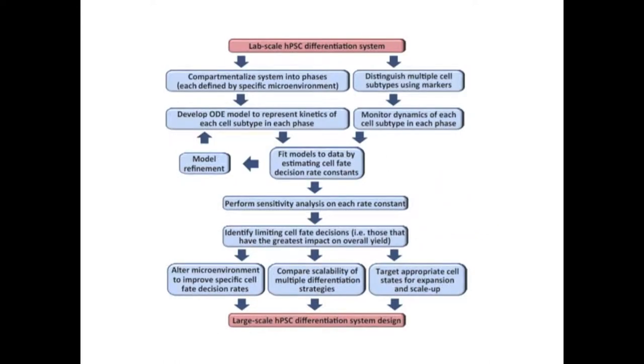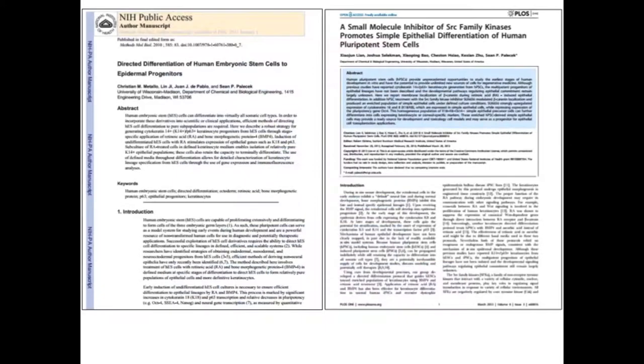To this end, we have designed a novel strategy for improving the efficiency of human pluripotent stem cell differentiation platforms. We have done this by identifying cell fate decisions that are potentially limiting to a differentiation process. To demonstrate how to use this approach, we used two previously reported epithelial differentiation systems from our lab as model systems.